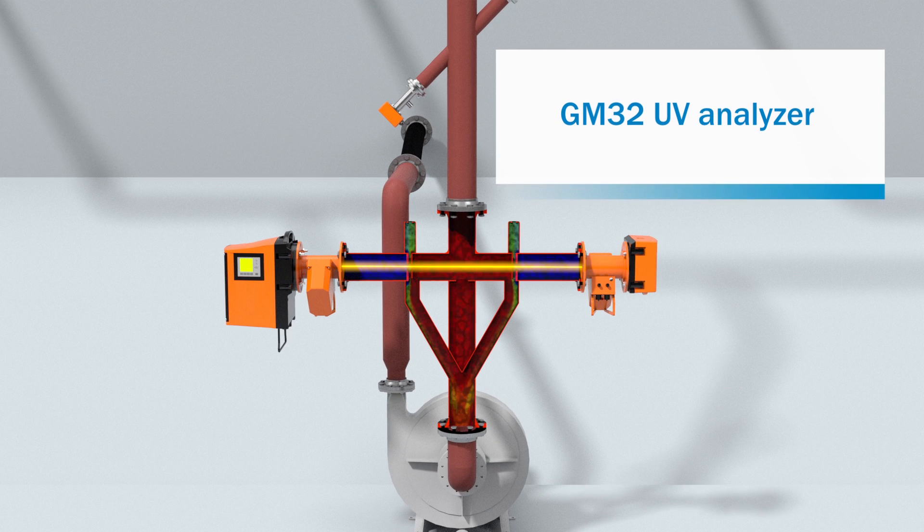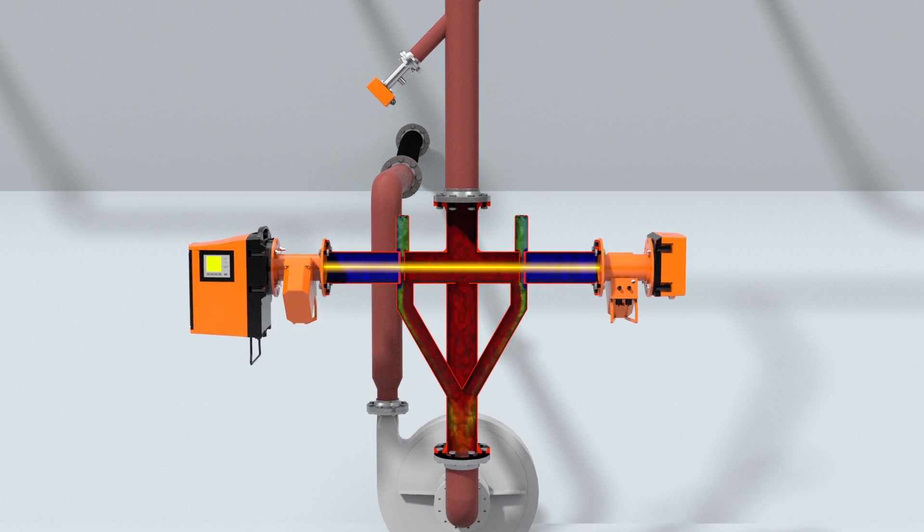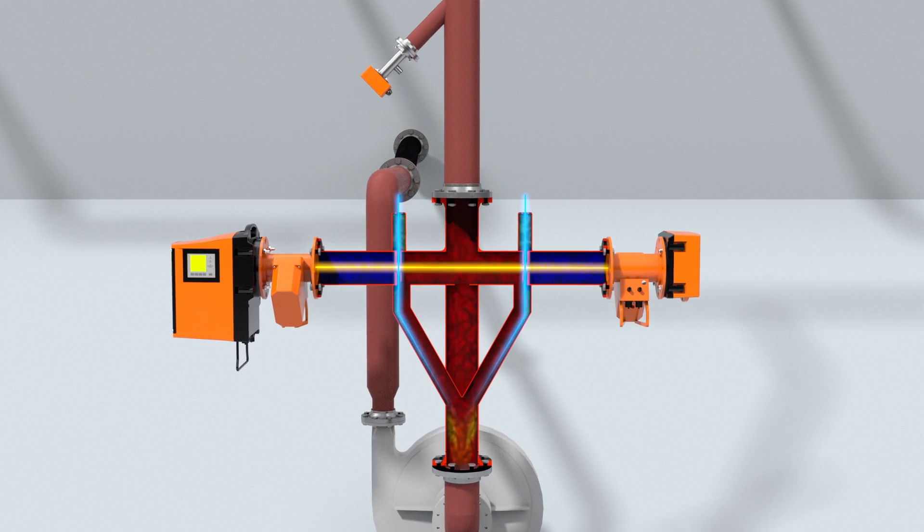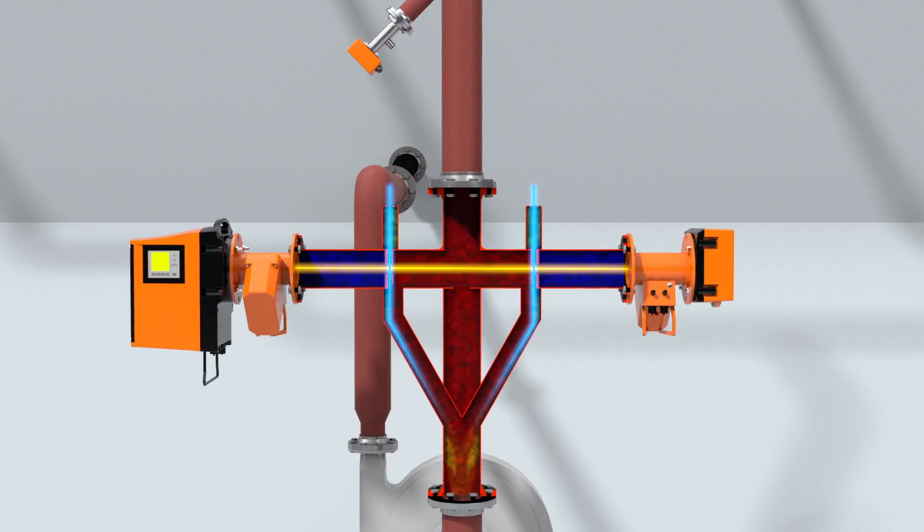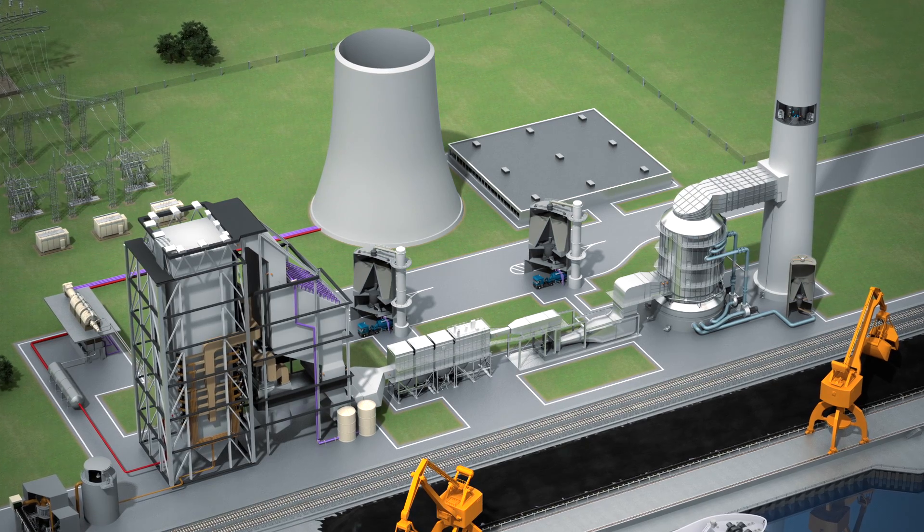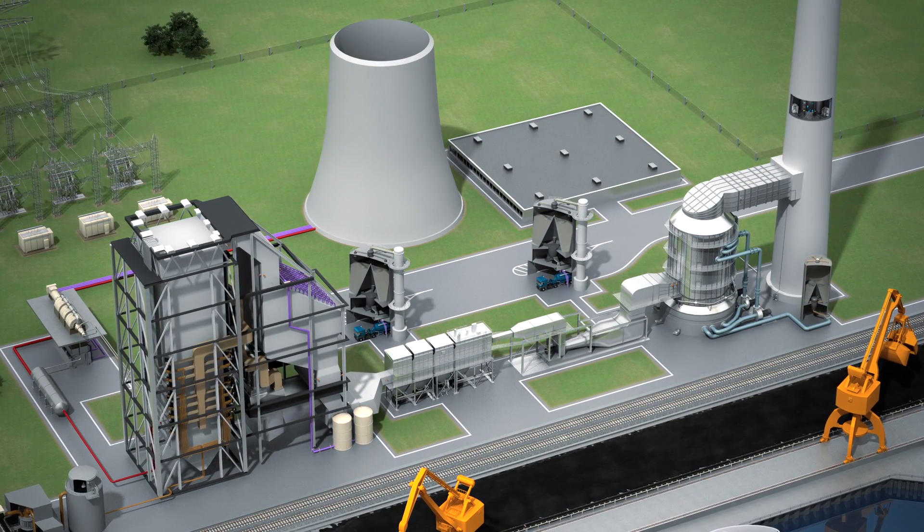The GM32 UV analyzer measures NOx content directly within the bypass cell, while the optics of the analyzer are cooled and maintained free of dust using purge air. The measurement result obtained enables the injection of ammonia to be precisely regulated.